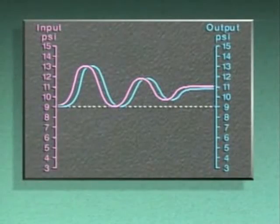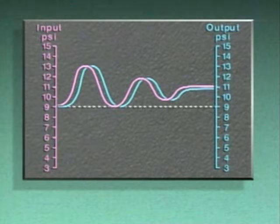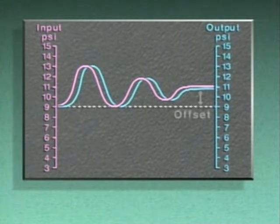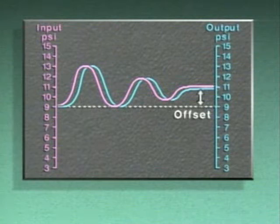Offset occurs because a proportional controller produces only enough output to bring a process back under control during a continual disturbance. It may not produce enough output to overcome the disturbance and return the process variable to its original set point. In some processes, a proportional controller may not return a process variable to its original set point. In other words, the controller's action may result in offset.